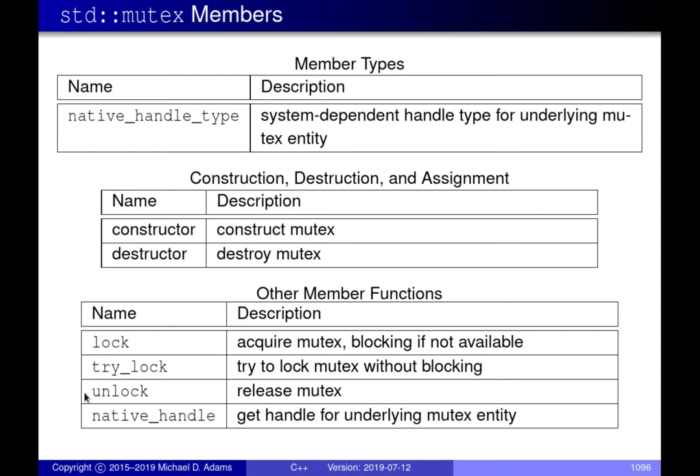Then we have a member function called unlock which releases the mutex, and a function called native_handle which allows access to the underlying OS-specific handle for additional features. Again, we won't be using native handles for any of the types we're discussing in this course.